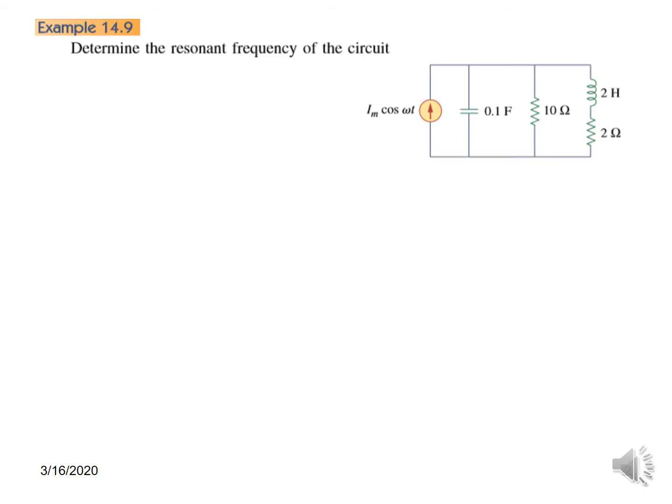This is a series-parallel combination—these two arms are in parallel with these two in series. Therefore, we cannot use the formula omega equals 1 over square root LC for this case, so we have to find another technique.